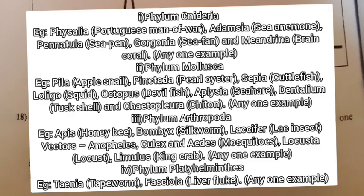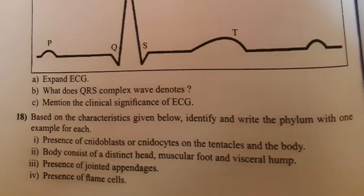Answer. 1. Phylum Cnidaria. Examples: Physalia (Portuguese man-of-war), Adamsia (sea anemone), Pennatula (sea pen), Gorgonia (sea fan), and Meandrina (brain coral). Any one example.